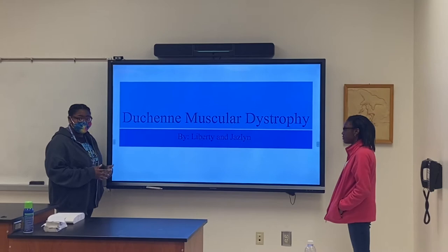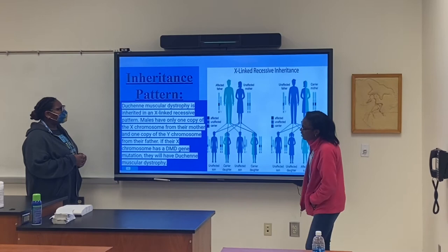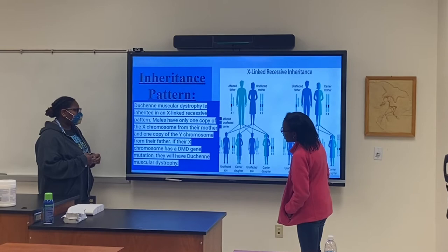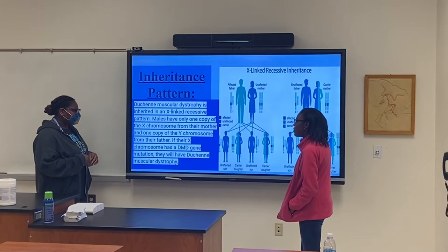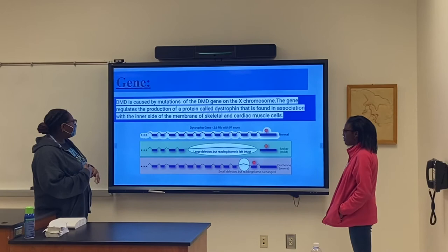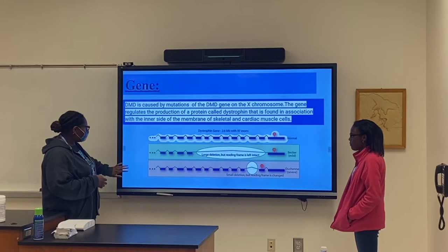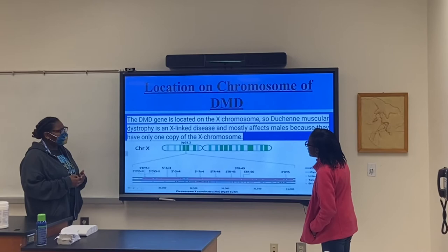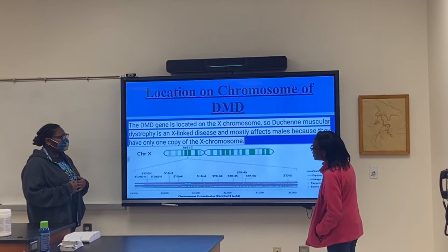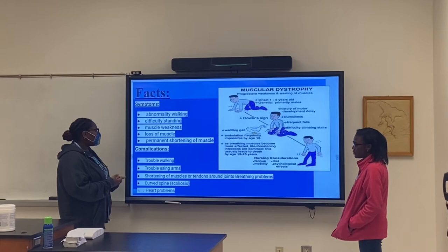This presentation is about Duchenne Muscular Dystrophy. DMD is inherited in an X-linked recessive pattern — males have only one copy of the X chromosome from their mother and one copy of the Y chromosome from their father. DMD is caused by a mutation of the DMD gene on the X chromosome; the gene regulates production of a protein called dystrophin found on the inner side of the membrane of skeletal and cardiac muscle cells. The DMD gene is located on the X chromosome, making muscular dystrophy an X-linked disease, primarily affecting males. Symptoms include abnormal walking, difficulty standing, muscle weakness, loss of muscle, and permanent shortening of muscle.